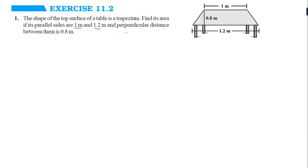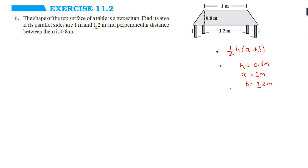What is given — that is important. We have to write the formula: half into (a plus b) into h. What is given: h is 0.8 meter, a is 1 meter, and b is 1.2 meter. Three things are given and we have to apply the formula. If we put the values in the formula: 1 plus 1.2.